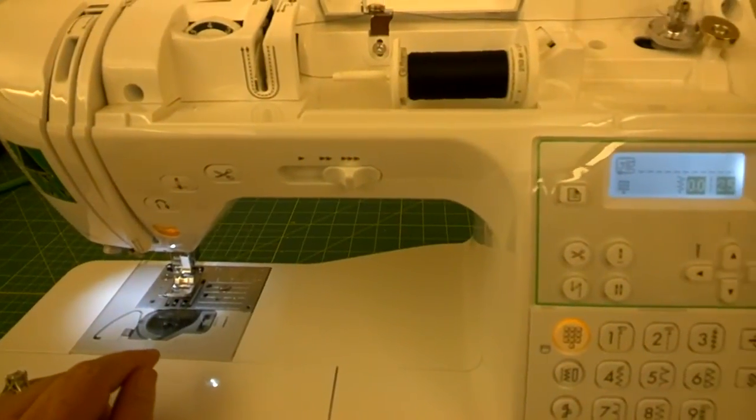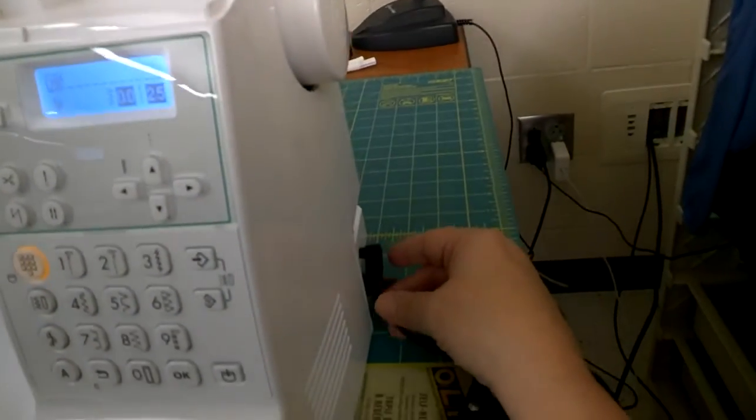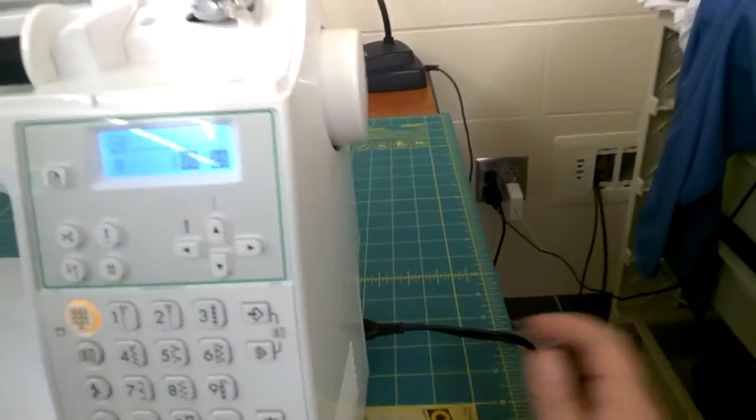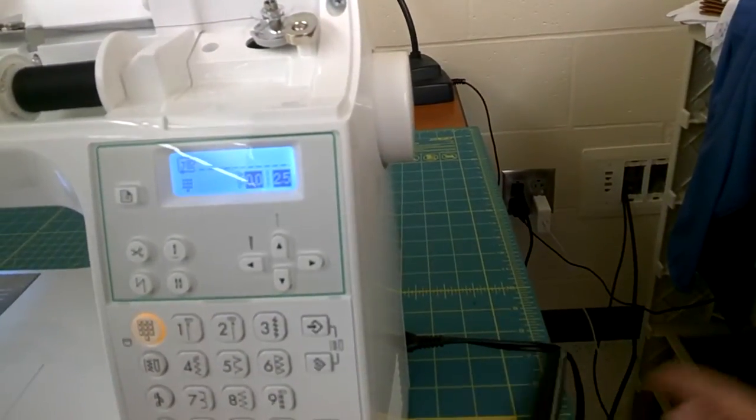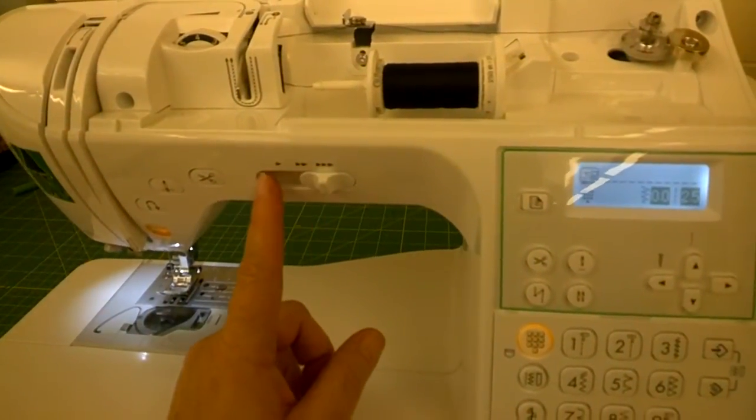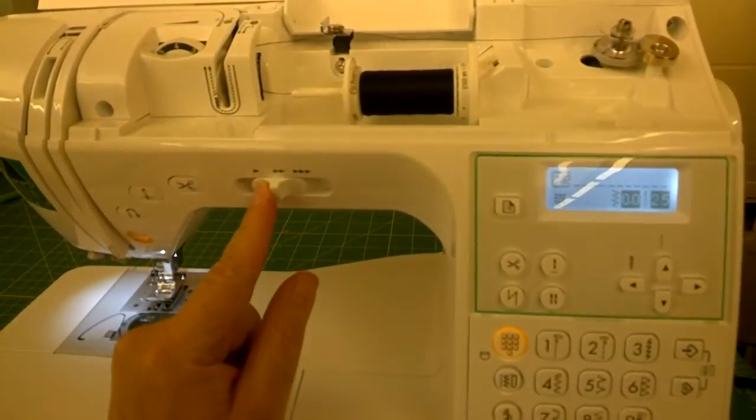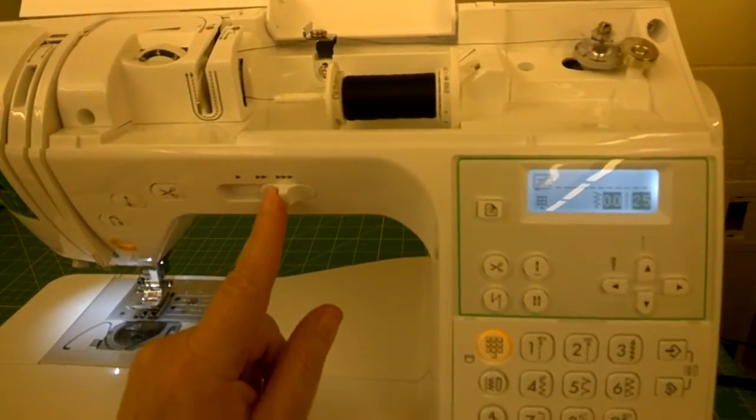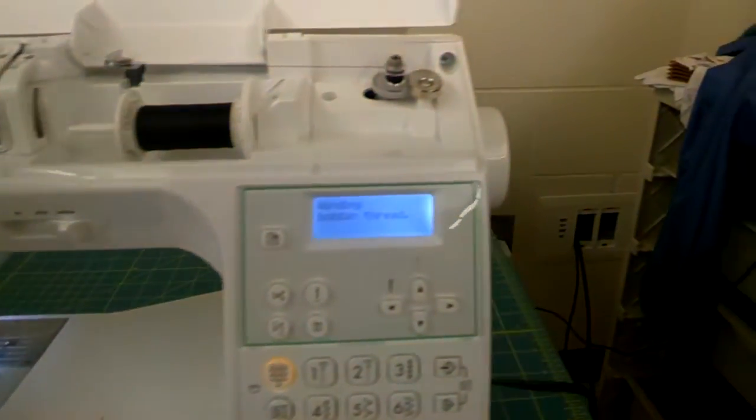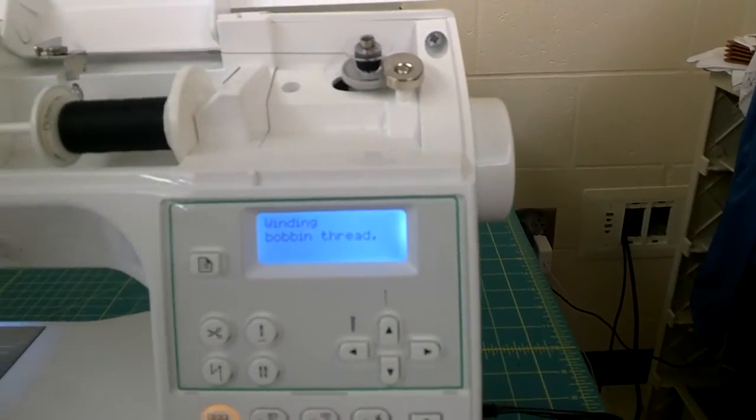The great thing about this machine is it has a stop and start button, and we're going to use that to wind our bobbin. To use that, I'm going to unplug the pedal from the machine and I'm going to adjust the speed control. If it's here it's slower, if it's here it's faster. I'm going to put it on fast, I'm going to hit start.